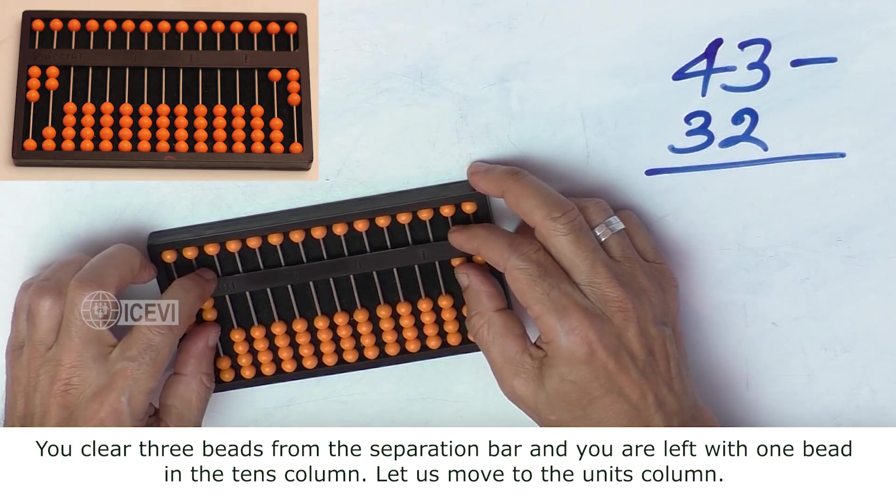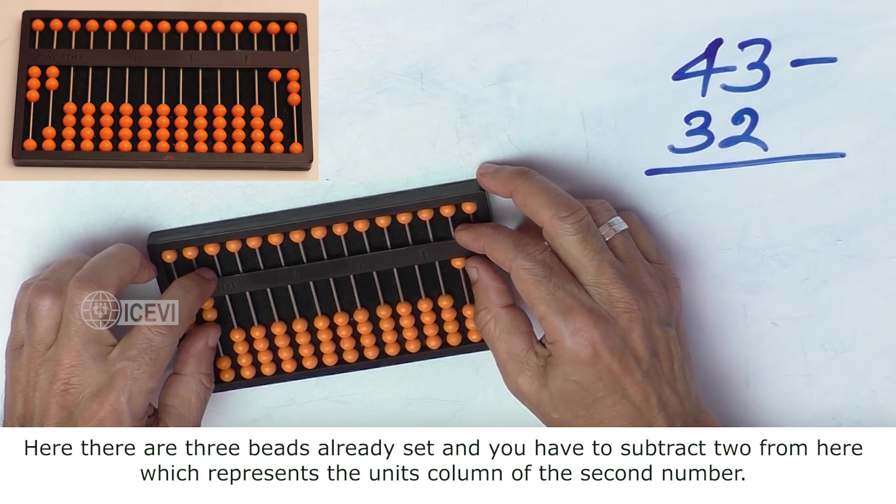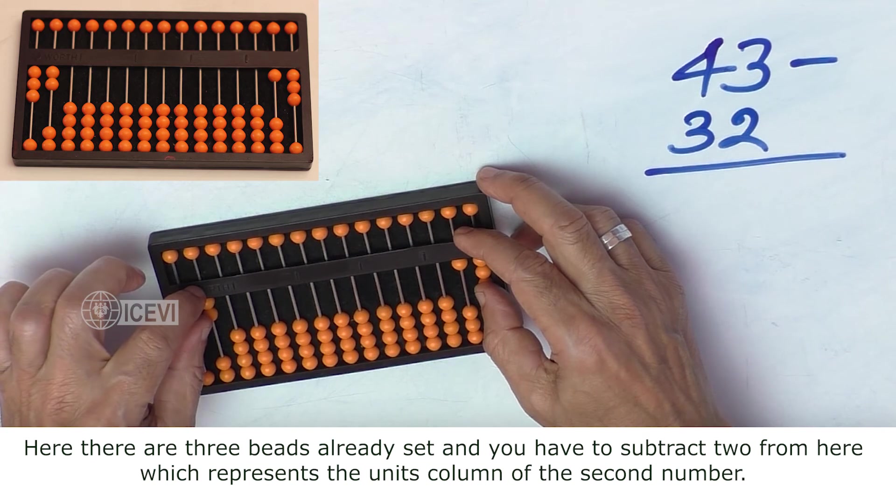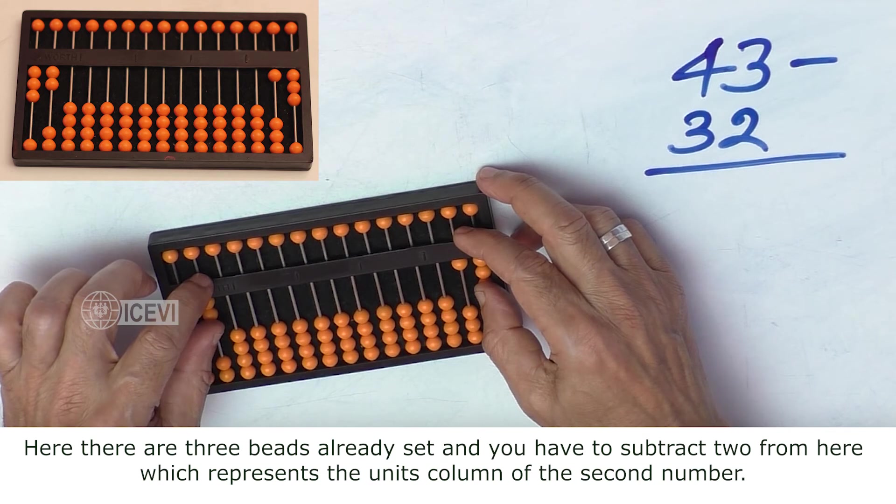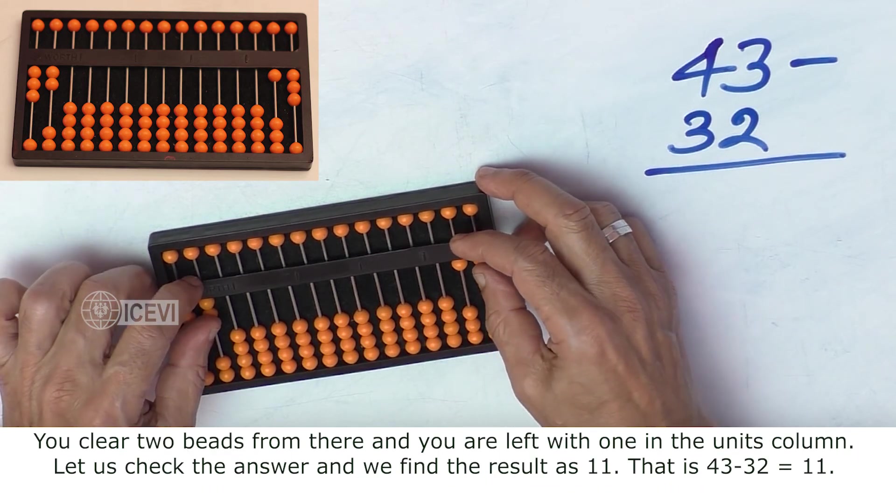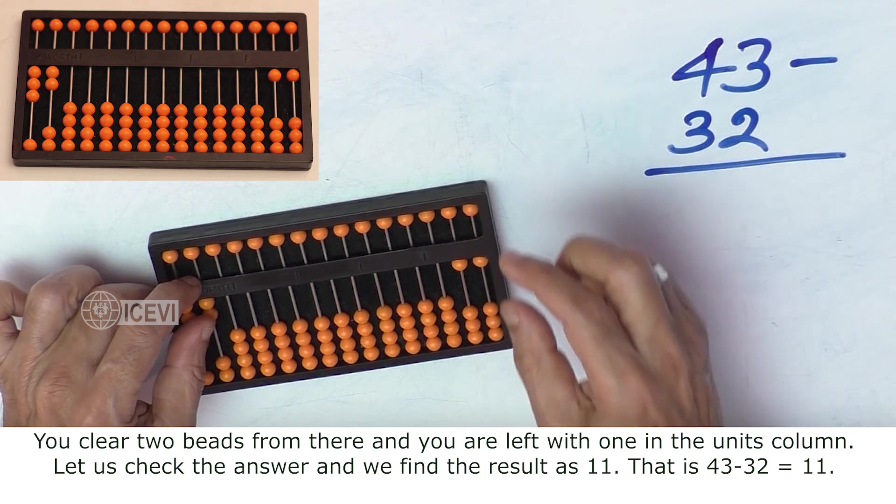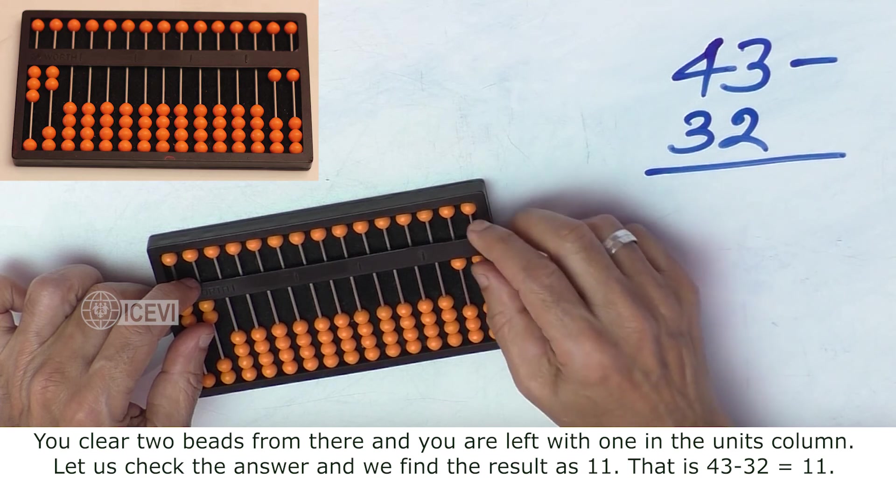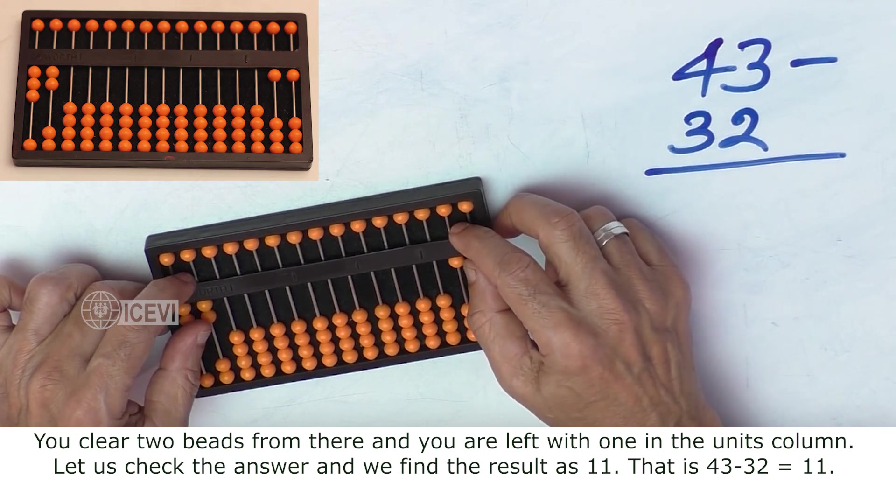Now, let us move to the units column. So, here we have 3 beads already set and you have to subtract 2 from here which represents the units column of the second number. So, you simply subtract 2 numbers. That means you clear 2 beads from the separation bar.